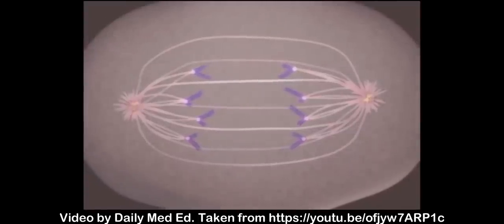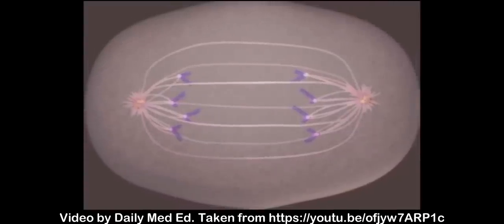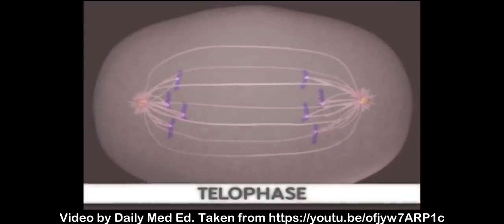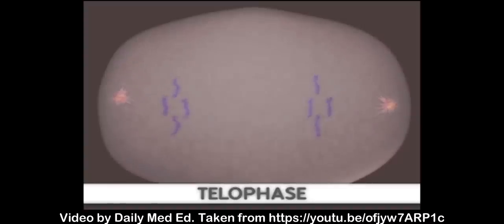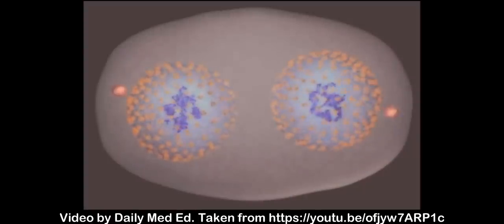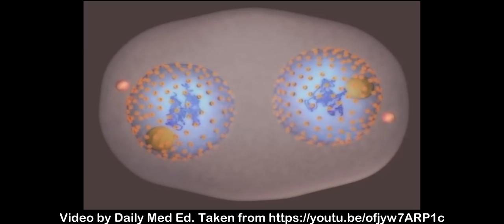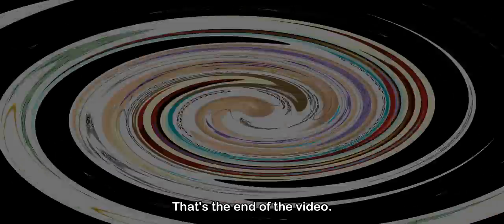Telophase is the final stage of mitosis. It is here that the components of the new cells begin to appear. The spindle fibers are broken up, a new nuclear membrane surrounds the chromosomes at each end of the cell, and the chromosomes uncoil and return to an uncondensed state. Mitosis is now complete. The formation of two cells is all that remains. Following mitosis, the cell undergoes cytokinesis.